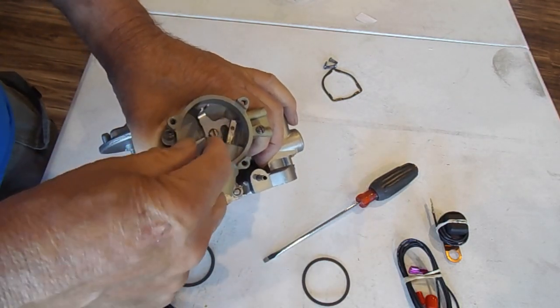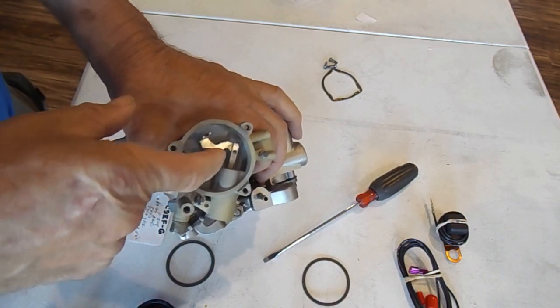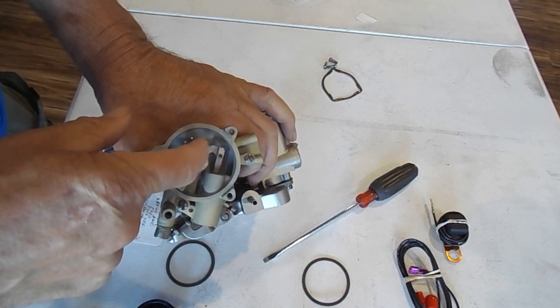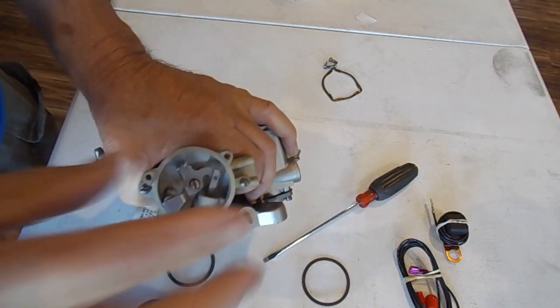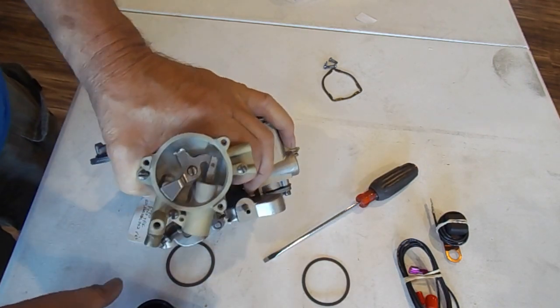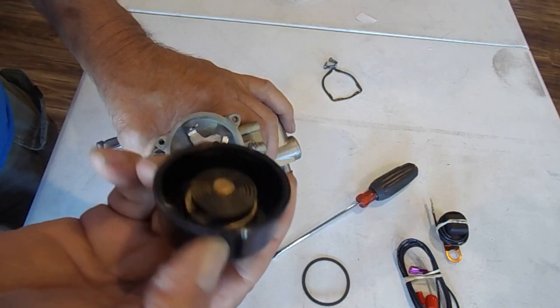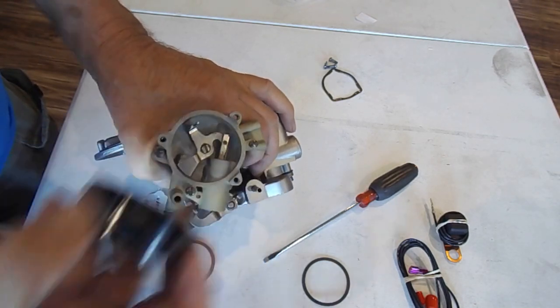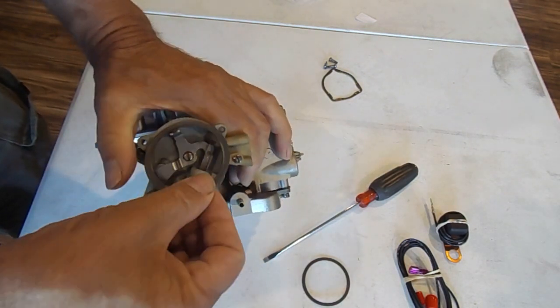And I might mention that some of these 2100s, not very many, had a post in the center here with a spring-loaded deal on it, and this particular converter kit will not fit that. You've got to be careful of that. We are getting some made that will have a deeper choke thermostat and they'll fit in there without rubbing. So if you need one of those, the chances are pretty good we have them by now.